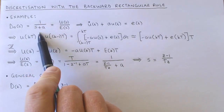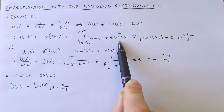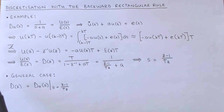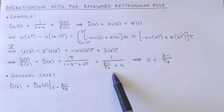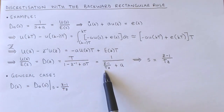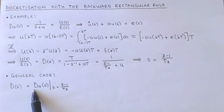Let's step through the same example using the backward rectangular rule. The designed continuous controller transfer function is converted to a differential equation, integrated over one sampling period, and the integral approximated by the backward rectangular rule. After applying the z-transform and some manipulation, we obtain the discrete controller transfer function, where we have essentially replaced s with (z − 1)/(Tz). The backward rectangular rule therefore defines a mapping from s to z given by s = (z − 1)/(Tz). In the general case, we calculate the discrete controller by taking the designed continuous controller and replacing s with (z − 1)/(Tz).